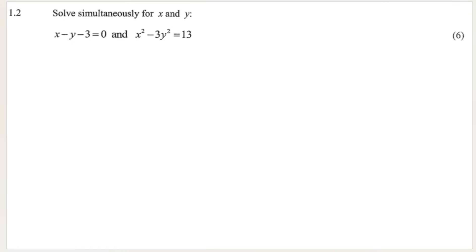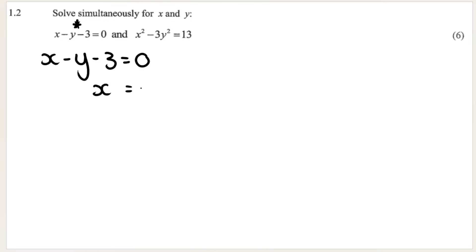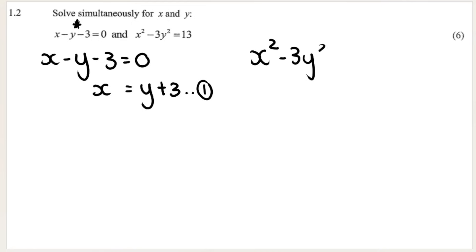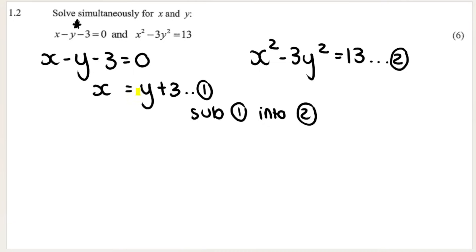Our next question is a simultaneous equation — solving for x and y with two equations. Our first step is to pick one equation and isolate one variable, making it the subject of the formula. I'll make x the subject: x minus y minus 3 equals zero, so the inverse of minus y is plus y and inverse of minus 3 is plus 3, giving x equals y plus 3. That's my first equation. I simply rewrite the second equation.